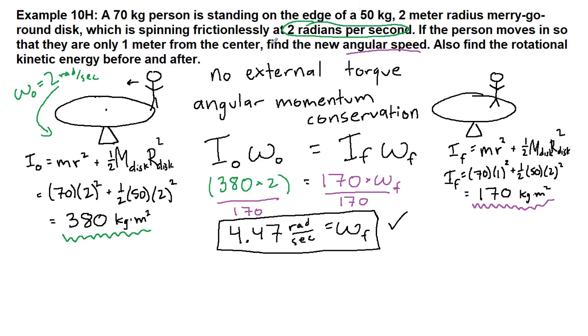What we are also asked to do is to find the kinetic energy, the rotational kinetic energy before and after. So the kinetic energy before is equal to one half times I initial times omega initial squared. That's simply the kinetic energy of rotation term. We can plug this in: one half times 380 times 2 squared, and all of that together we get 760 joules when we round.